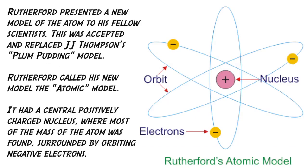Rutherford presented a new model of the atom to his fellow scientists. This was accepted and replaced J.J. Thompson's plum pudding model. Rutherford called his new model the atomic model. It had a central positively charged nucleus where most of the mass of the atom was found, surrounded by orbiting negative electrons.